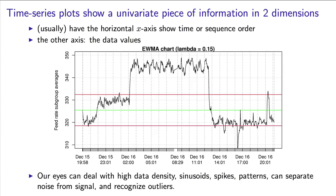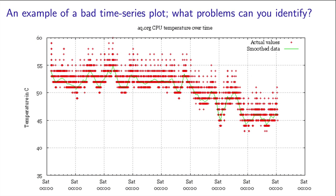But why make the brain work more than necessary? Remember, fast, quick decisions must be made with confidence. Let's show a few examples of good and bad time series plots. The first one shows the CPU temperature over time. Pause the video now and identify all the bad features in the plot — there are quite a few of them. Bad labeling on the x-axis is just the first. The second is the hard to see difference between the red raw data and the smooth green line.